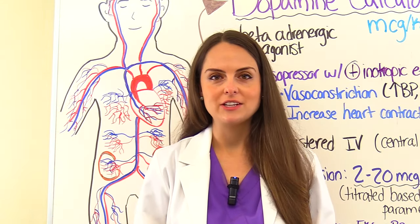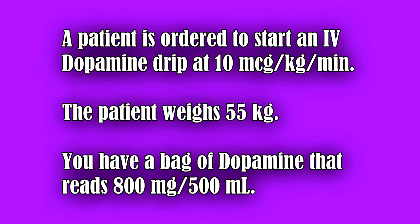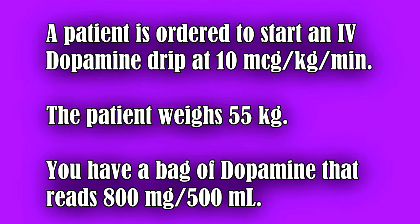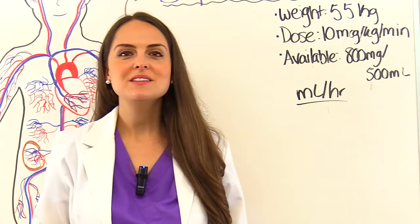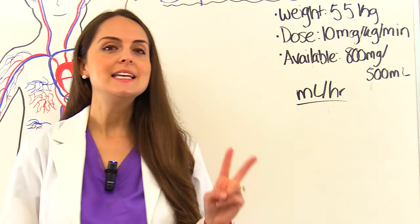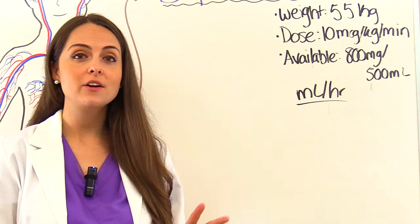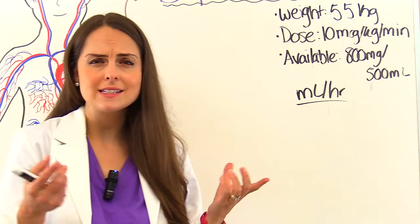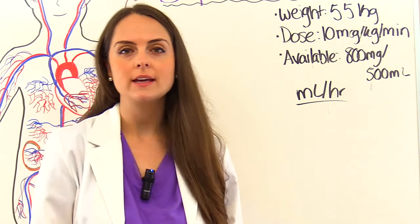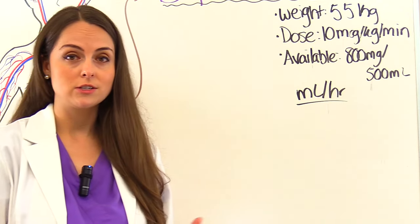Now let's do some practice dopamine calculations. A patient is ordered to start an IV dopamine drip at 10 micrograms per kilogram per minute. The patient weighs 55 kilograms. You have a bag of dopamine that reads 800 milligrams per 500 mL. What will you set the IV pump rate at? To solve this problem we need three things: the patient's weight (55 kg), the dose (10 mcg/kg/min), and what's available — a 500 mL bag containing 800 milligrams of dopamine. We're trying to get to milliliters per hour.